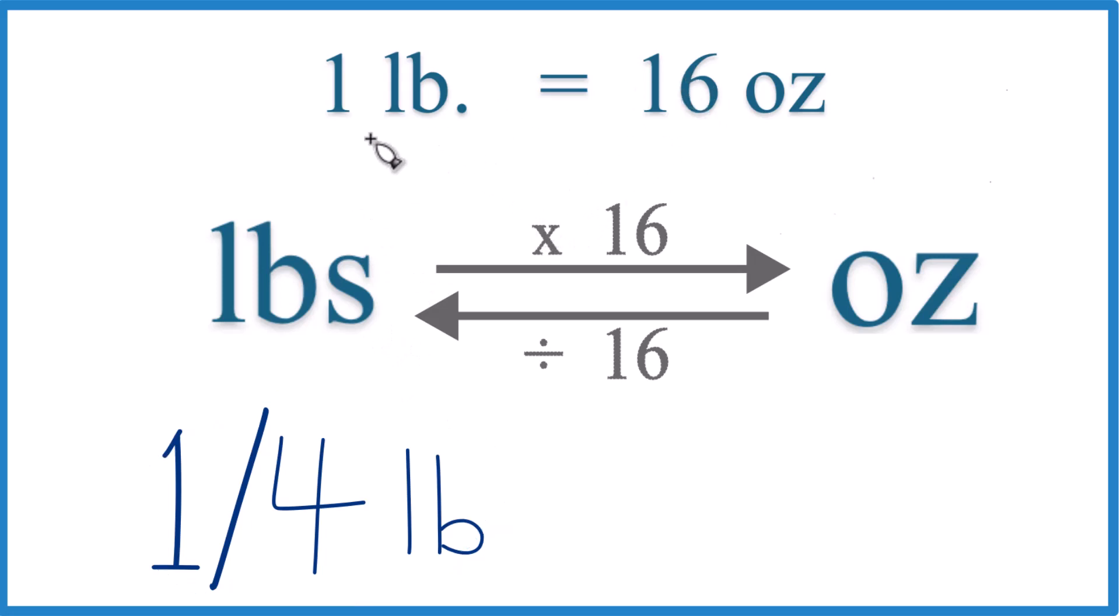And here's what you need to know. One pound equals 16 ounces. We call this a conversion factor. There's 16 ounces in one pound.